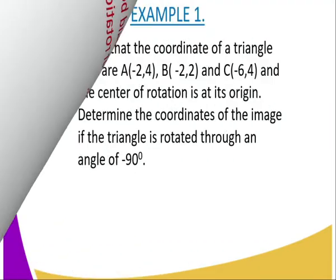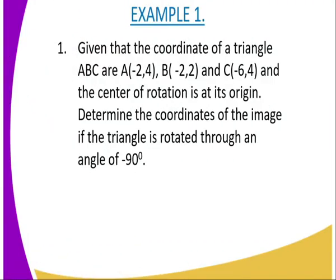Let's go to example one. Given that the coordinates of triangle ABC are A(−2, 4), B(−2, 2), and C(−6, 4), and the center of rotation is at the origin, determine the coordinates of the image if the triangle is rotated through an angle of negative 90 degrees. In this question, you can see that the angle given is negative.